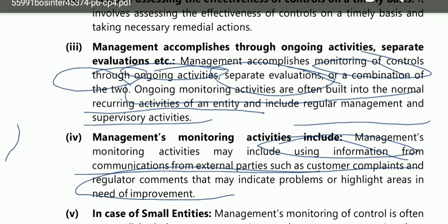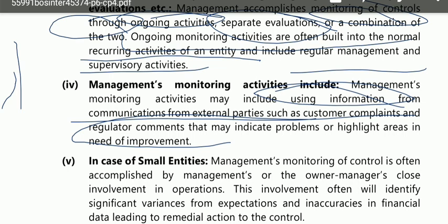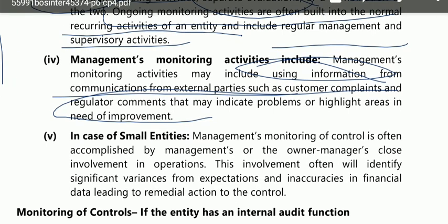Every entity monitors controls, risks, and if management is monitoring controls they will do so accordingly. In the case of small entities, management monitoring of controls is often accomplished by management or the owner-manager's close involvement in operations. This involvement often identifies significant variances from expectations and inaccuracies in financial data, leading to remedial action. For example, in a sole proprietorship the owner and manager are the same person.